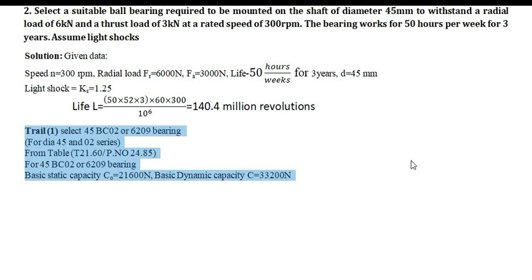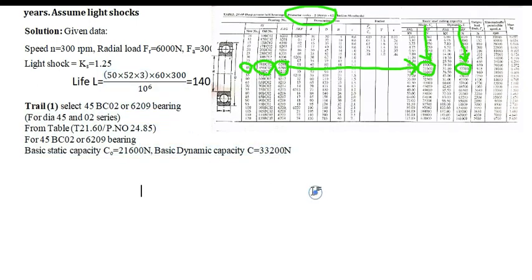The first trial, first trial, select the 45BC02. This is the diameter series 2 I have selected. You have to refer the table 21.60 page number 24.85. This is a series where we are going to obtain static capacity 21600N and dynamic capacity 33200N.